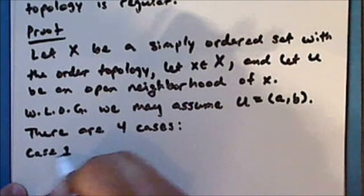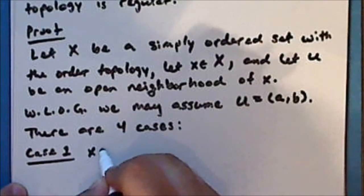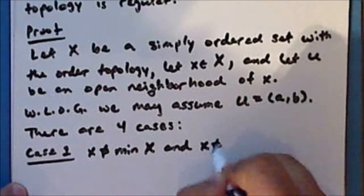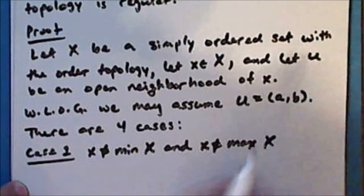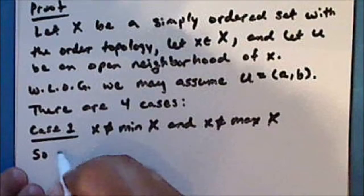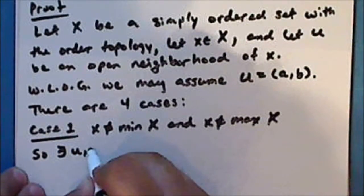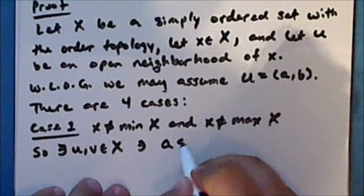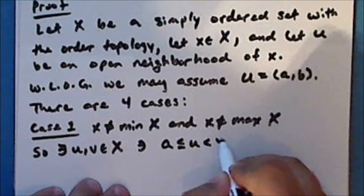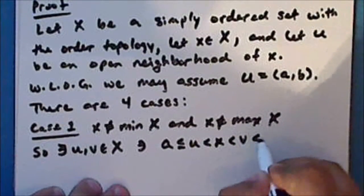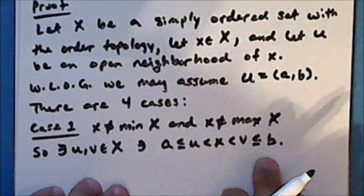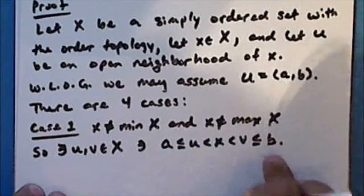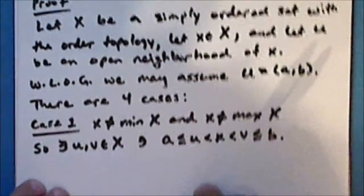Case one: the point x is not the least element and is not the greatest element. So there exist points u and v in the space X such that a ≤ u < x < v ≤ b. Notice that in this chain of inequalities, we allow for the possibility that a and b are the least and greatest elements respectively.